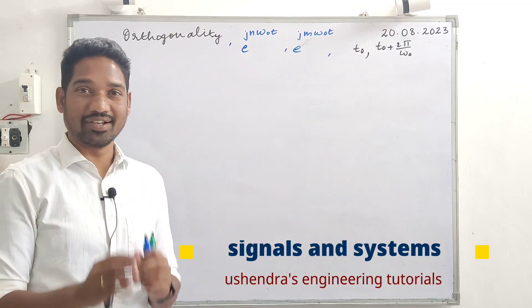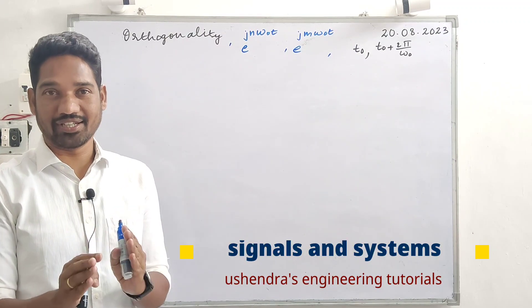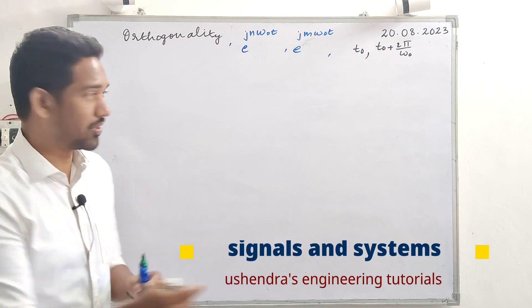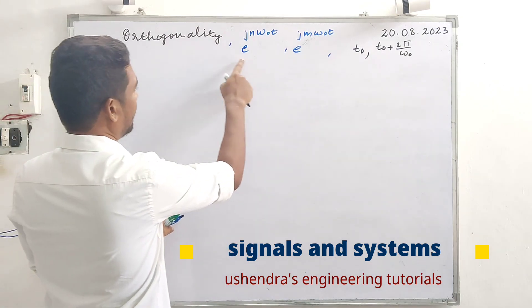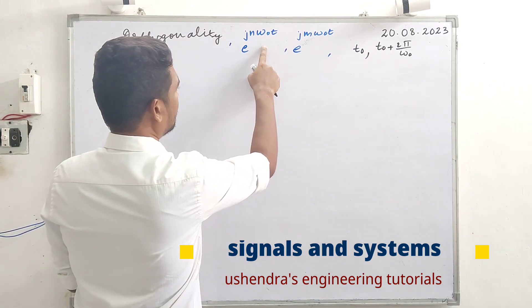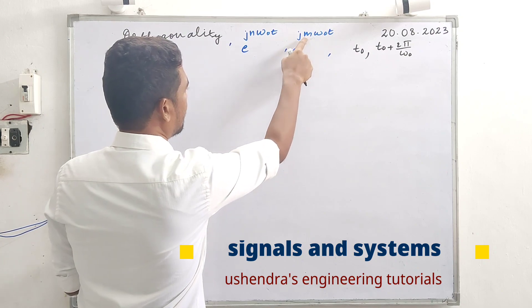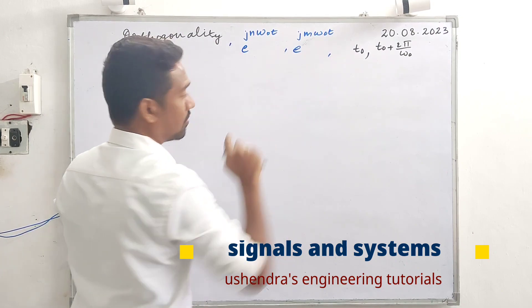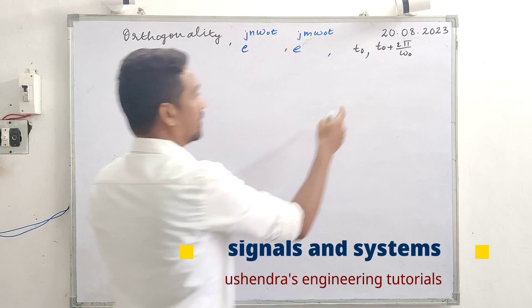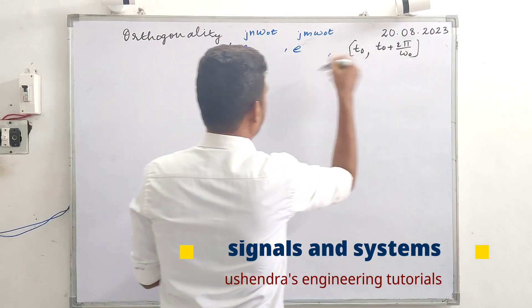Hey guys, signals and systems, first unit orthogonality. Same question: prove that e raise to jn omega naught t comma e raise to jm omega naught t are orthogonal over the interval, in the given interval, and condition n not equal to m.